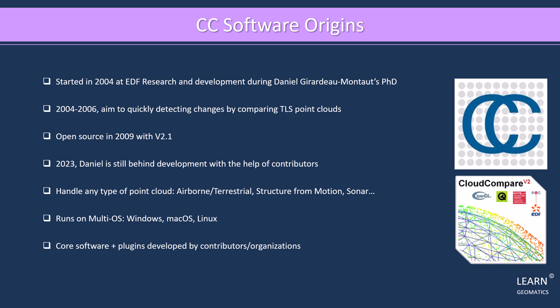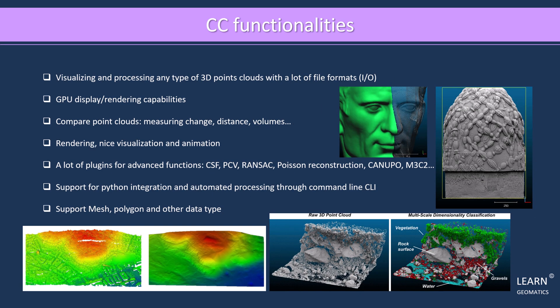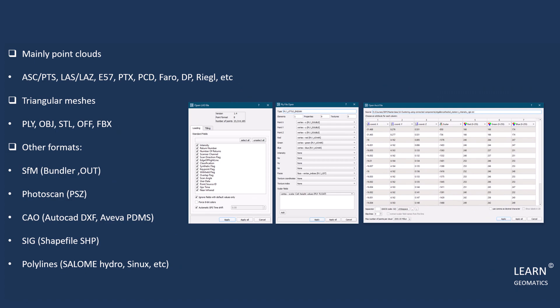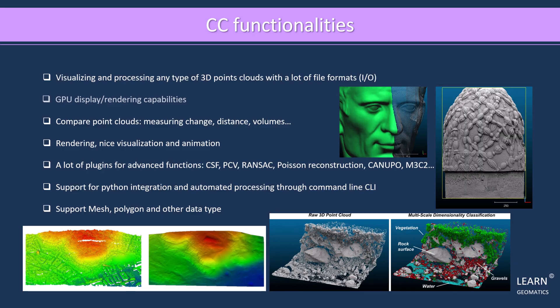It's a versatile 3D point cloud processing software that can handle a lot of file formats for input and output, making it easy to visualize and process any type of 3D point cloud. Additionally, it has GPU display and rendering capabilities which allow faster and more efficient processing. One of the most significant features of Cloud Compare is its ability to compare point clouds, which includes measuring changes, distances, and volumes. This feature is useful for a range of applications, from environmental monitoring to quality control and manufacturing.